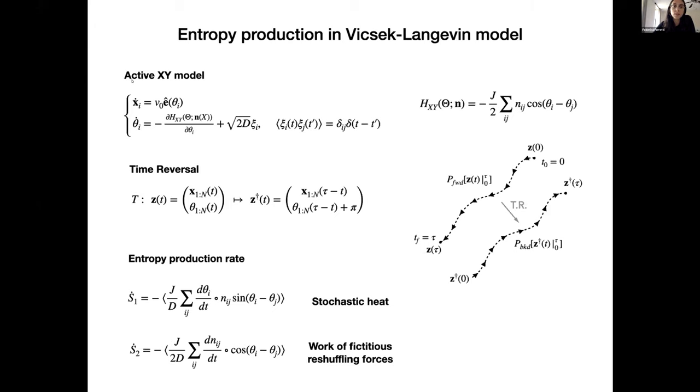We found two formulas starting from these equations for the active XY model, which are equivalent in the steady state. The first formula can be interpreted as the rate of dissipation of the stochastic heat into the thermal bath. You can recognize this NAJ sine theta I minus theta J that is proportional to the alignment torque. So this is basically the work that the alignment torque makes on the orientational degrees of freedom. And the second formula can be obtained again from the equations, assuming local detailed balance, a la Crooks, if you want.